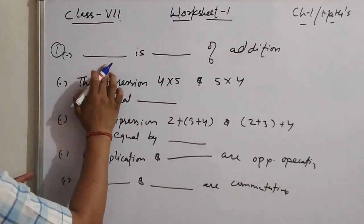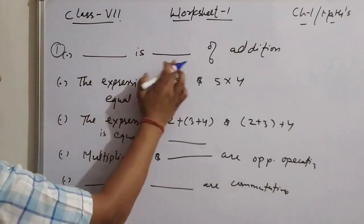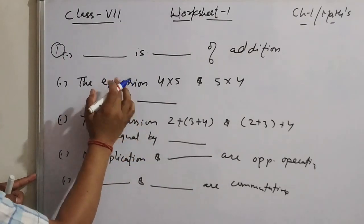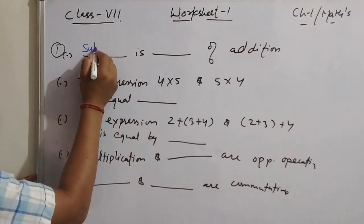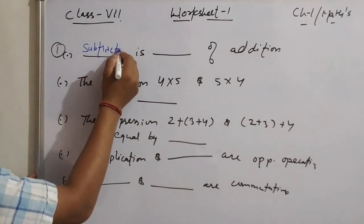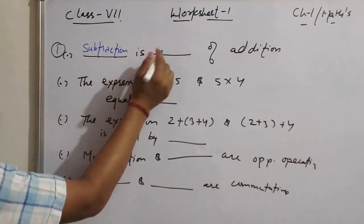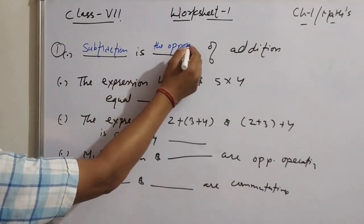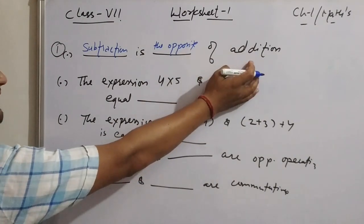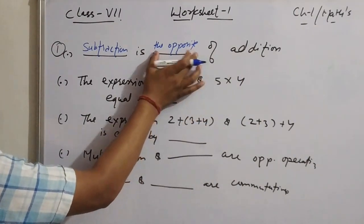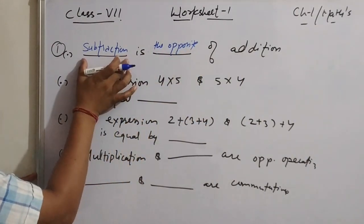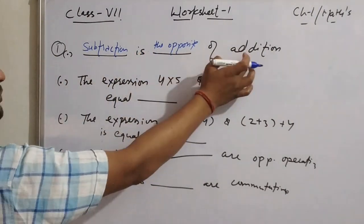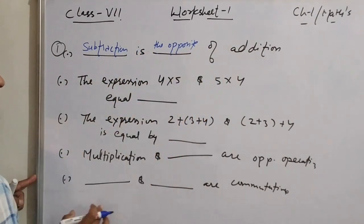Starting with the first blank: dash is the dash of addition. The answer is subtraction. Subtraction is the opposite of addition.